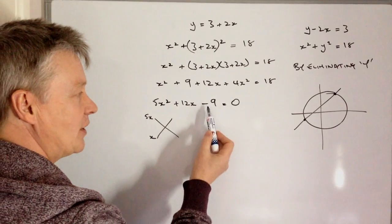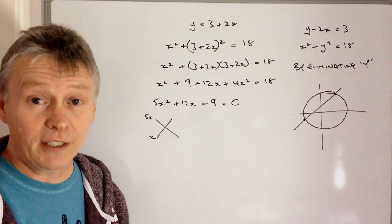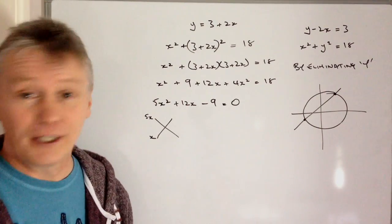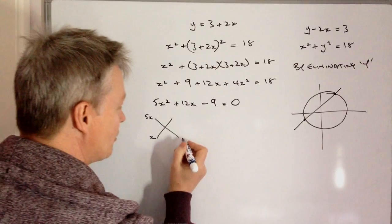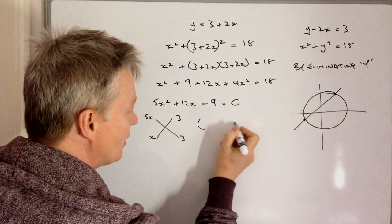The reason I like this method is because I know that the two numbers that multiply together to make 9 are going to be either 3 and 3, or 9 and 1. Well, I'm going to use 3 and 3.